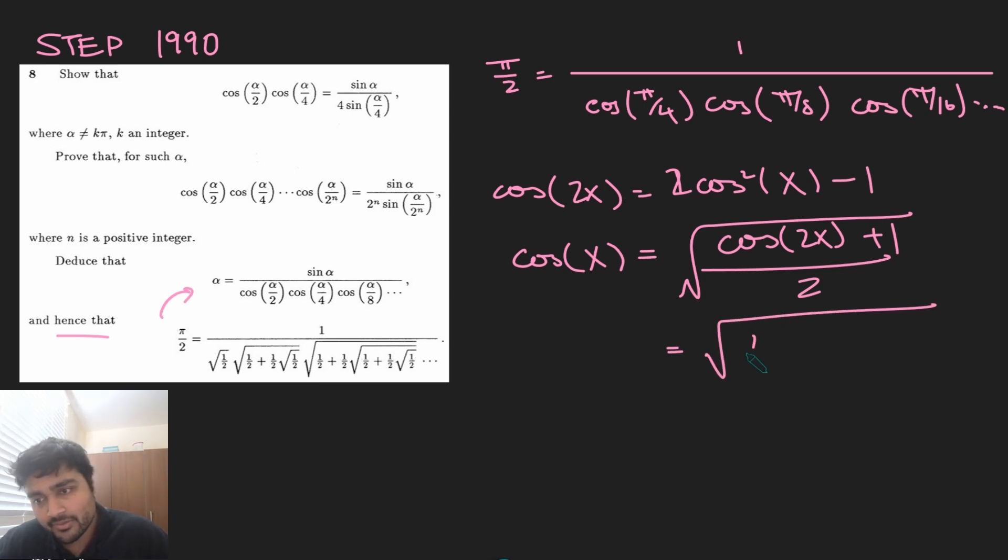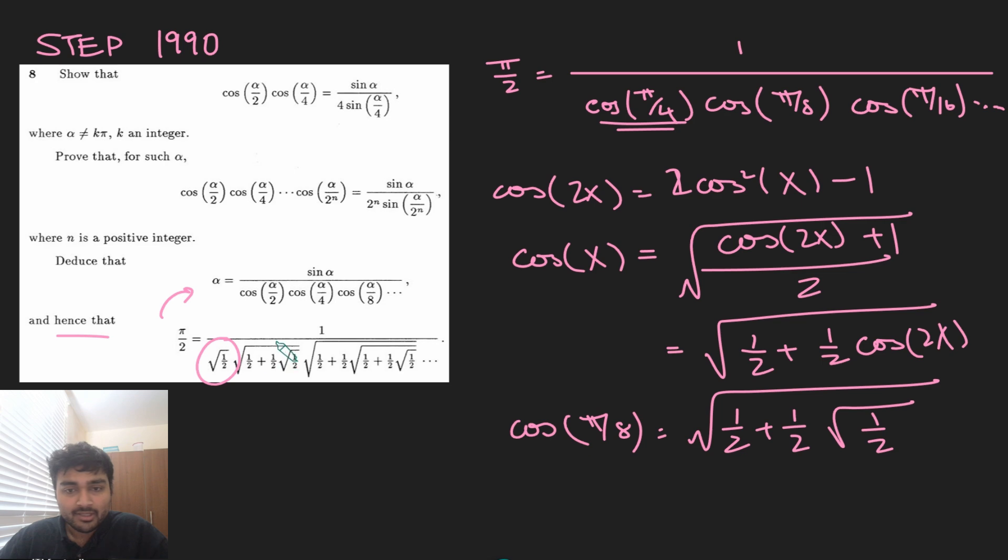And what's another way of writing this? Well, this is just the square root of a half plus a half cosine 2x. And this is where we're going to get this weird nested product from. So to give you an example, cosine of pi by 8 is going to be the square root of a half plus a half times cosine of pi by 4, which we know is the square root of a half. So the first term, the square root of a half, is cosine pi by 4. This next term here is cosine pi by 8. This next term here will be cosine pi by 16 and so on. So a really remarkable way to approximate pi.